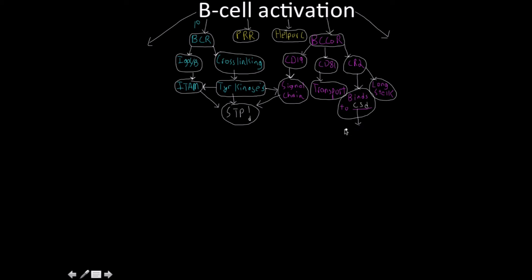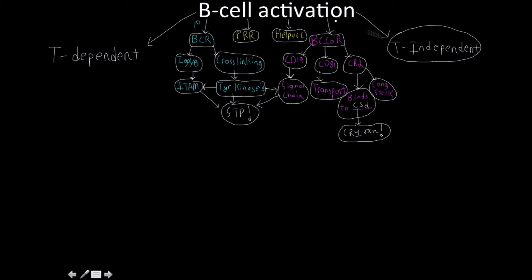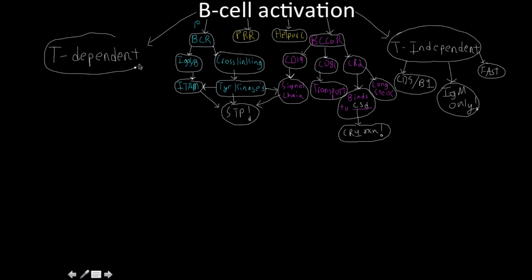For T-independent B-cell activation: this is really fast, we tend to use B1 cells, and it produces IgM only — very high in quantity but low in quality. For T-dependent B-cell activation, there are three parts: follicular dendritic cells, subscapular sinus macrophages, and T-follicular helper cells.